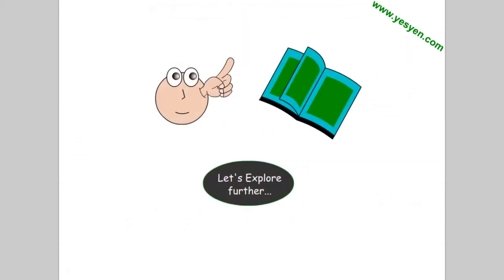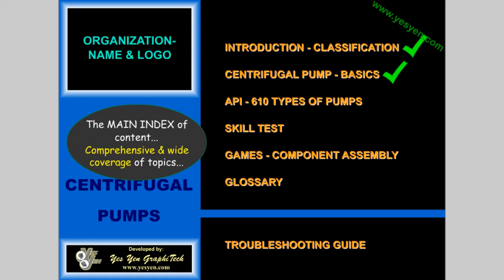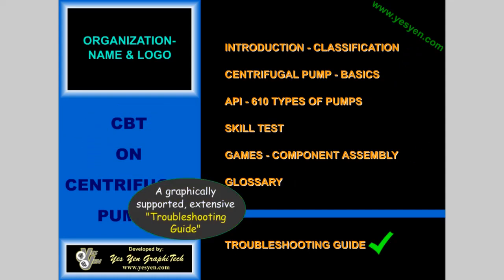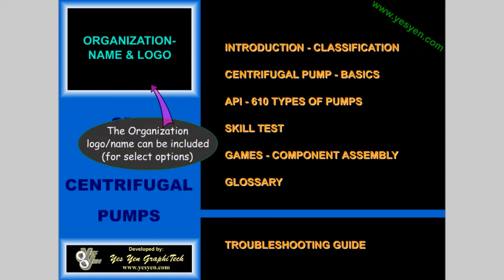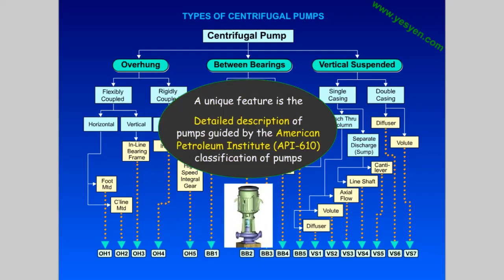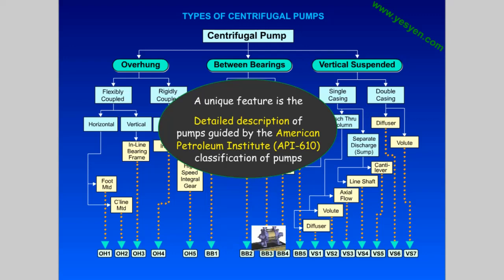Let's explore further. The main index of content offers comprehensive and wide coverage of topics, including a graphically supported, extensive troubleshooting guide. The organization logo and name can be included. A unique feature is the detailed description of pumps, guided by the API 610 classification.